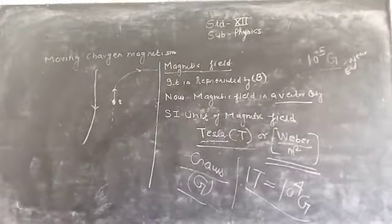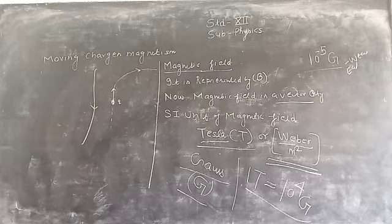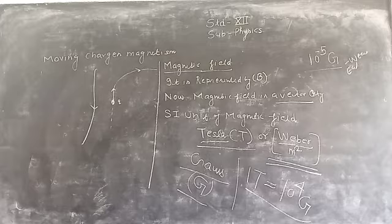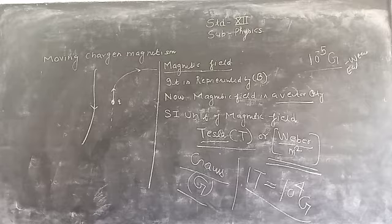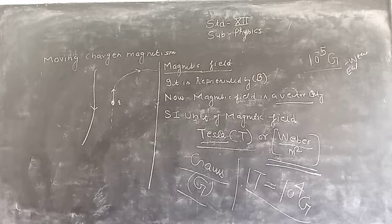The Earth creates various types of dangerous flares and death radiations coming toward Earth. These are deviated by the effect of the magnetic field. If there were no magnetic field, we could not survive, because various types of charged particles that come toward the Earth's surface are deflected by the Earth's magnetic field — their paths are deviated so they cannot reach the Earth, and thus we survive easily.